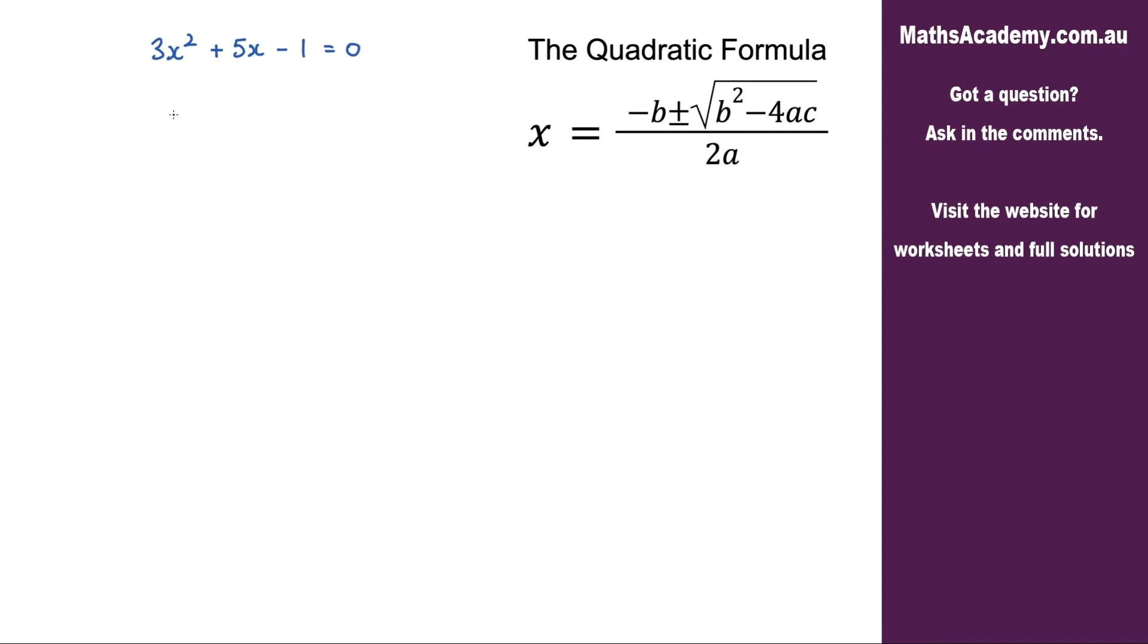Now the first thing I like to do is to write down the values of a, b and c. So make these very clear. The value of a, well that's the coefficient of the x squared term which is 3. The b is the coefficient of the x term. Obviously that's 5. And c, that is the constant. In this case it's negative 1. And always be careful that you include any negatives in there.